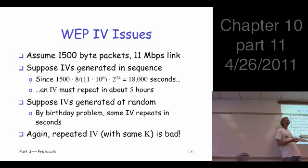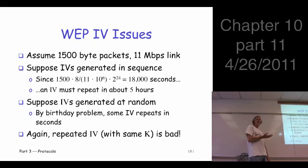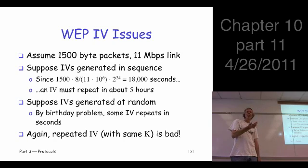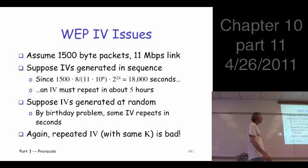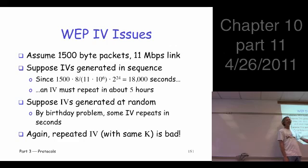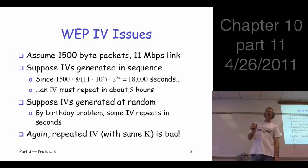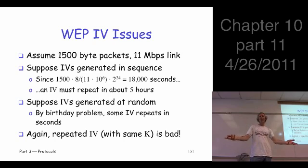On the other hand, if you generate IVs at random, by the birthday problem you'd expect to find a repeat after seeing only 2^12 IVs. Plugging that into the numbers, you get a collision in seconds. After that, repeats become easier and easier to find.